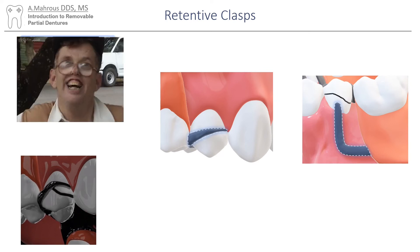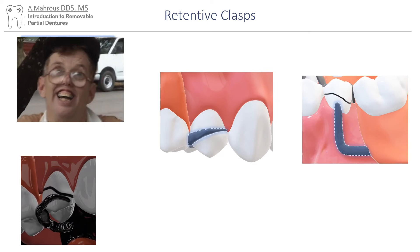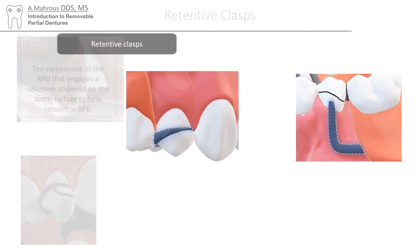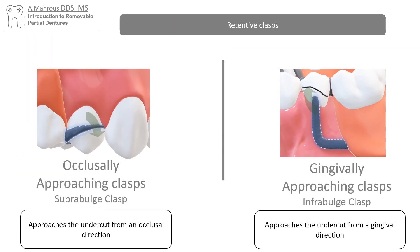For example, this person here has not very good retention. Based on the way these clasps approach the undercut, they can be classified into an occlusally-approaching clasp that approaches the undercut from an occlusal direction, or a gingivally-approaching clasp that approaches the undercut from a gingival direction.